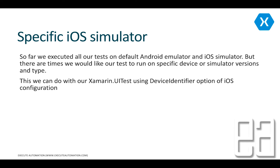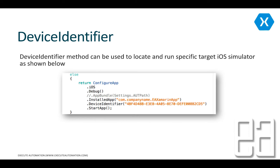So far we executed all our tests on the default Android emulator and iOS simulator, but there are times we would like to run our test on a specific device or simulator version and type. This can be done with Xamarin.UI test using the device identifier option of iOS configuration. Device identifier is a separate method which you can write to perform the identification of a specific device using its identifier.